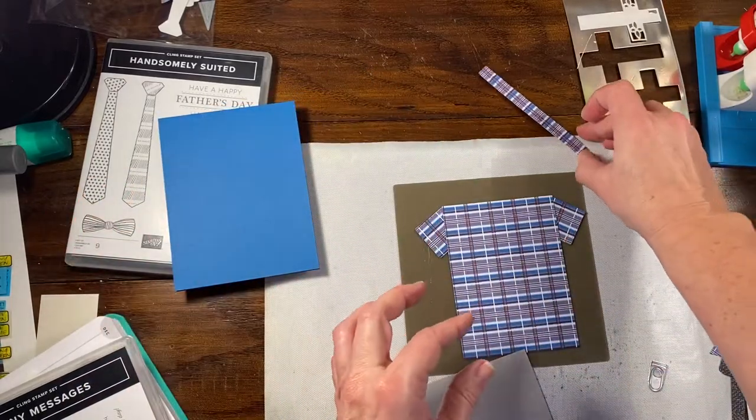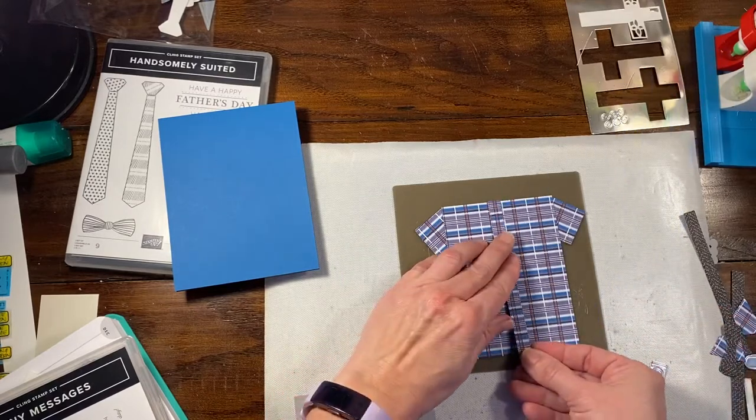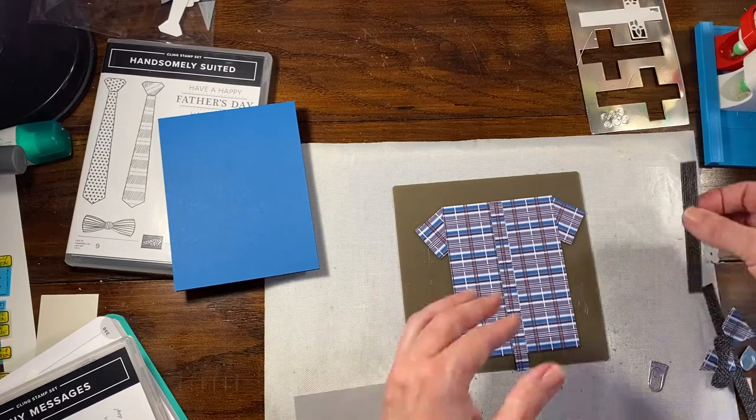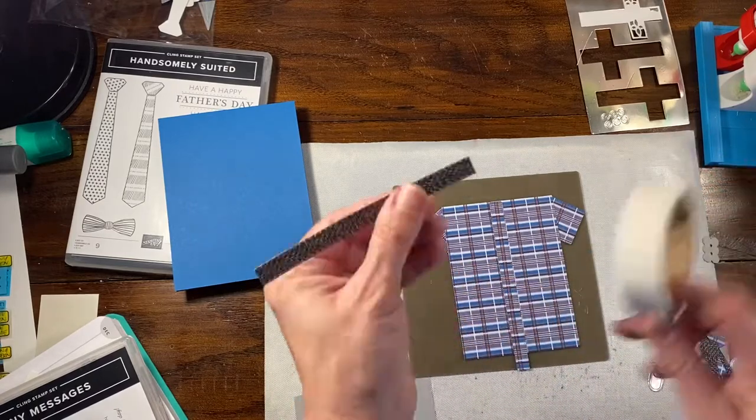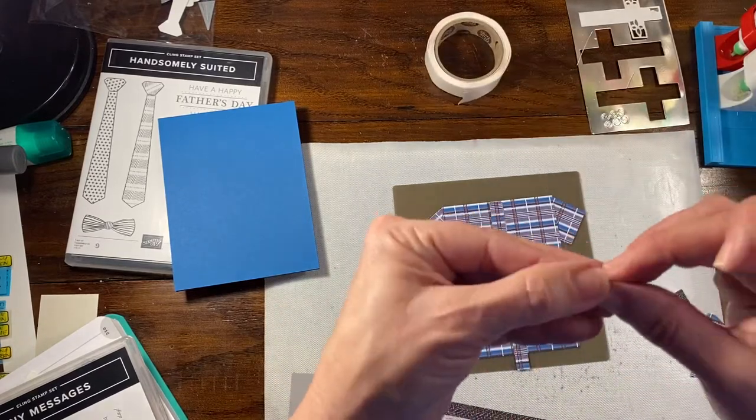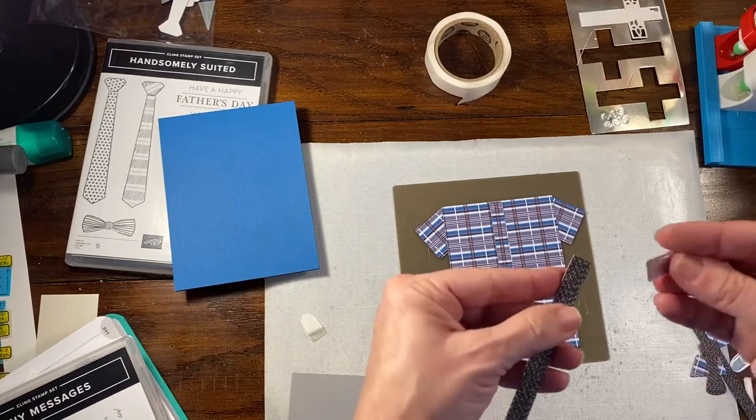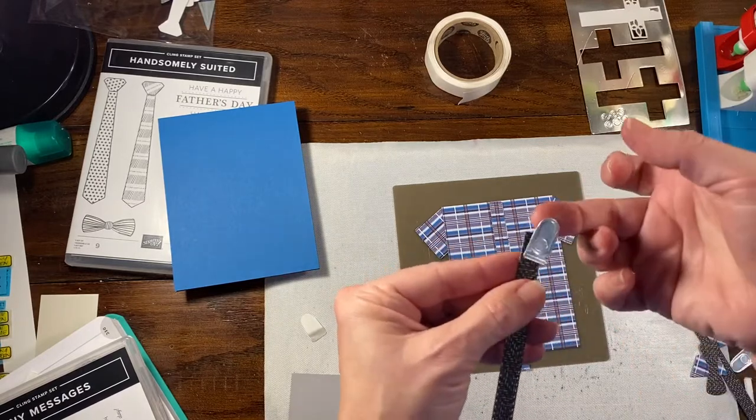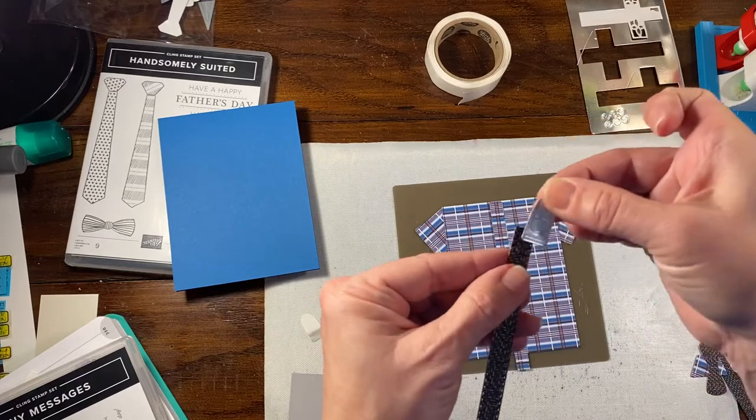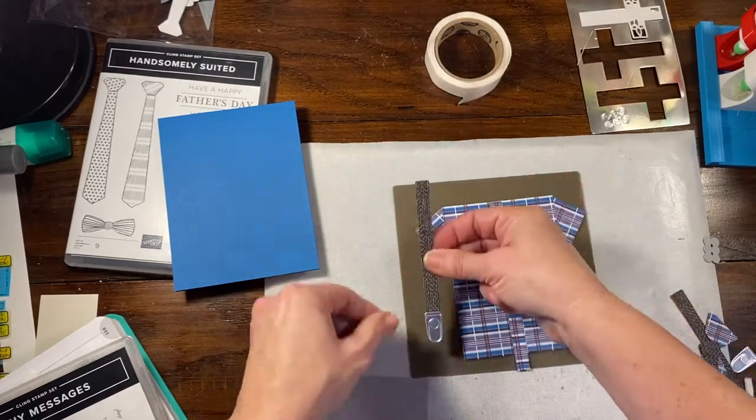You could always make one yourself if you have the envelope maker still. So, this is going to go down onto our card. What I'm going to do is I'm going to start with putting the suspenders together. I'm going to take the adhesive off of the back of the clips.